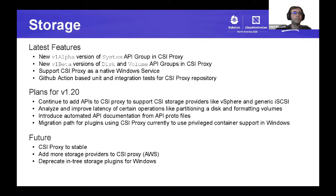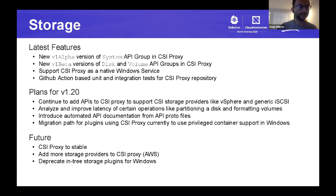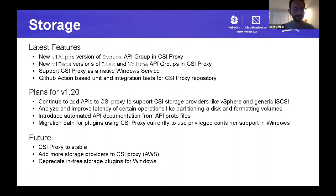On storage, we've been concentrating on CSI Proxy to enable CSI support for node plugins in Windows. We've introduced a new System API group in CSI Proxy, adding support for querying Windows service status and enabling iSCSI support. We've added new APIs to the existing Disk and Volume API groups for operations like resize and onlining/offlining disks. CSI Proxy is now supported as a native Windows service, and we've enabled GitHub Actions-based unit and integration tests.